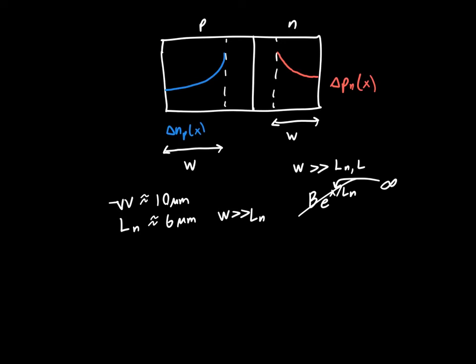So in previous videos, we said that if I want to solve for delta n of x inside the p region, we said that was described by the differential equation, by the continuity equation, which in the region outside the depletion region simplified to this relatively simple equation.